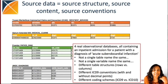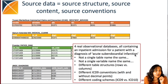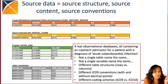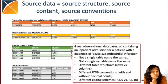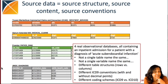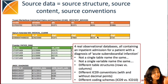Here is an example of four real observational databases: the Truven MarketScan Commercial Claims and Encounters database, the Optum Extended Claims database, the Premier database, and the JMDC database. They all contain an in-patient admission for a patient with a diagnosis of acute sub-endocardial infarction. But as you can see, not a single table name is the same, not a single variable name is the same — they all have different table structures, different ICD-9 conventions, different coding schemes.